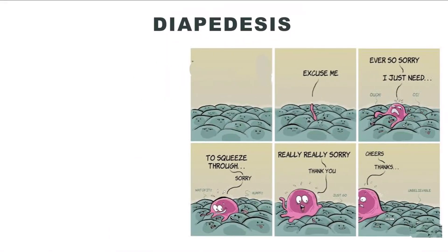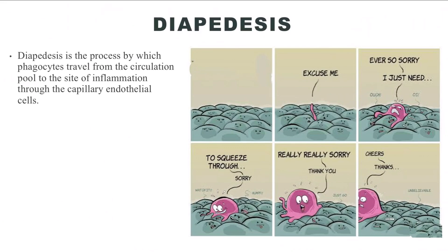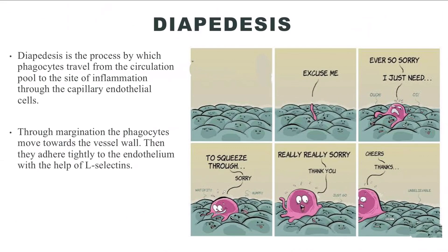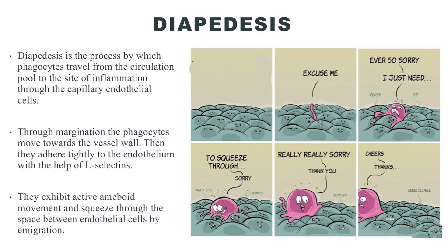Step two: Diapedesis. The attraction from chemotaxins stimulates the neutrophils to make their way through the capillary endothelial cells to the site of inflammation. This process is termed as diapedesis. Firstly, the neutrophils move to the margins of the capillary through margination and then attach tightly to the endothelial lining through adhesion. By amoeboid movement, the neutrophils now squeeze through the endothelial cells to reach the target site.